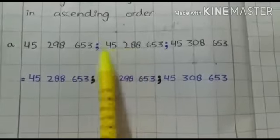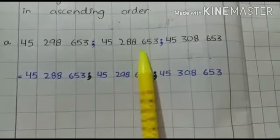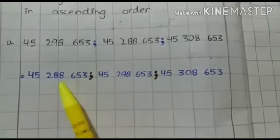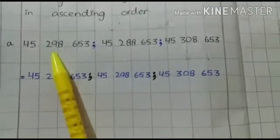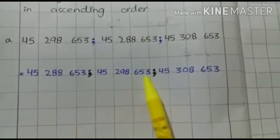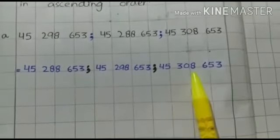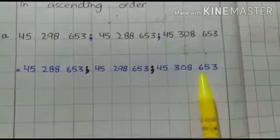So it means 9 is greatest value according to 8. So which is the smallest value? 45,288,653, we will write this first. Second we write 45,298,653. And third we write 45,308,653. Okay?